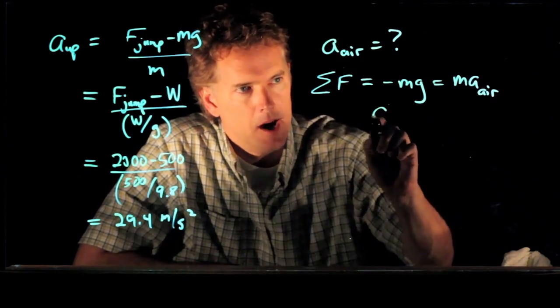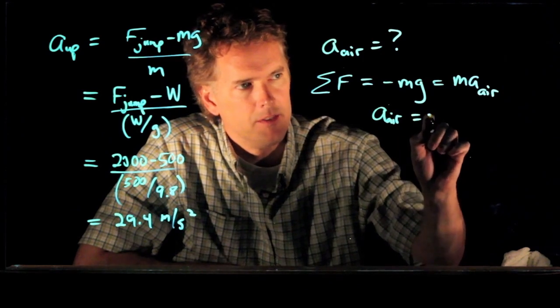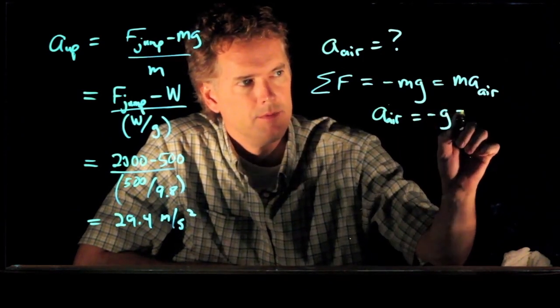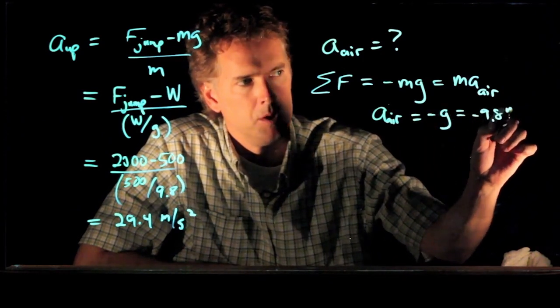And so a_air, like you suspect, is just negative g. Negative 9.8 meters per second squared.